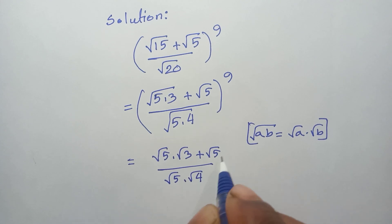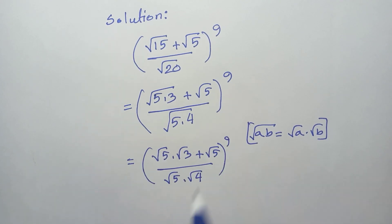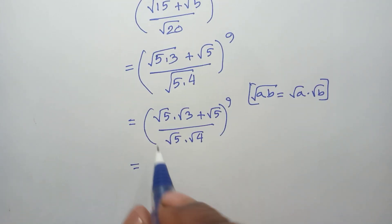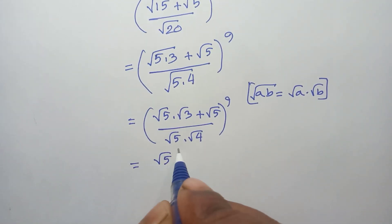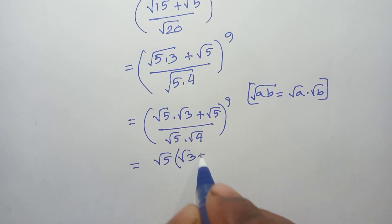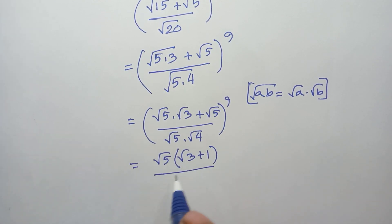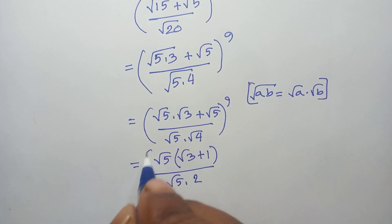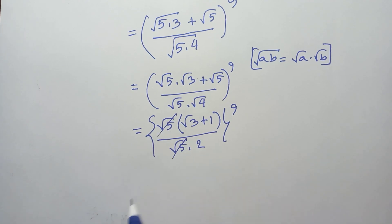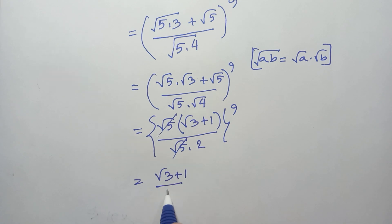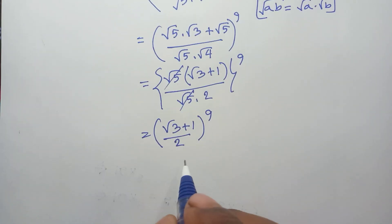Here we have √5 in the numerator and √5 in the denominator, so √5 is common and cancels out. We get (√3 + 1) / 2 raised to the power 9, since √5·√4 = √5·2 and the √5 cancels.